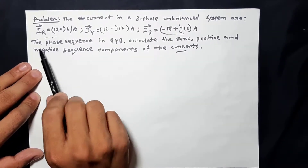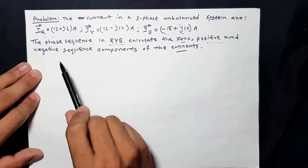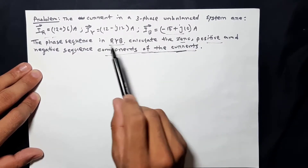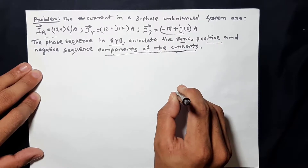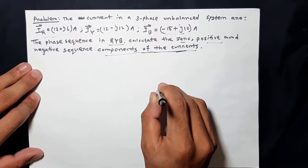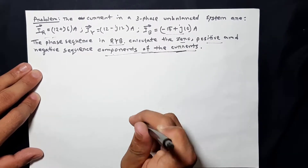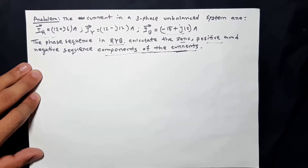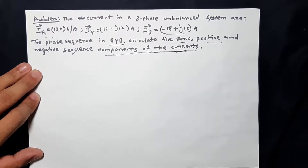For the phase sequence R-Y-B, calculate the zero, positive, and negative sequence components of the current. The current can be written in terms of positive and negative sequence components. You can write the red phase as the zero sequence component.